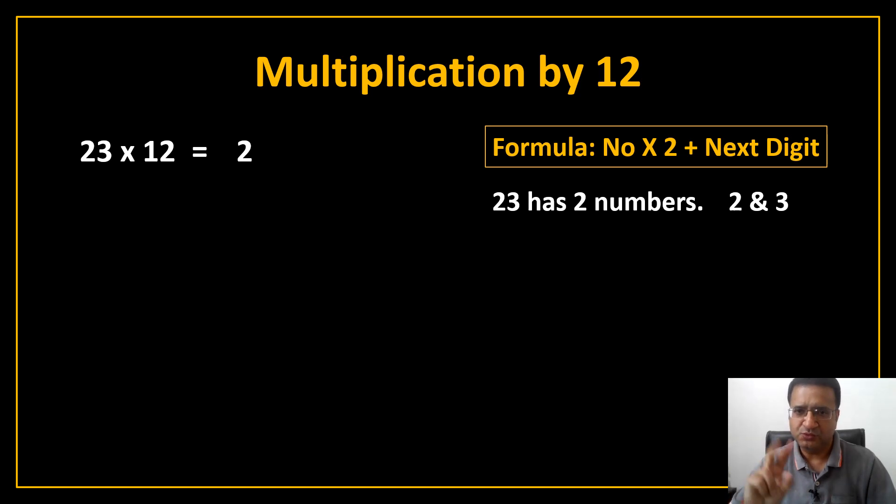So, 2 x 2 plus next digit. In 23 first number is 2 and what is next digit? It is 3. So, 2 x 2 plus 3 and it comes 7. So you just insert 7 here.